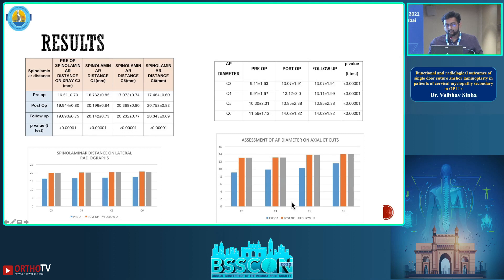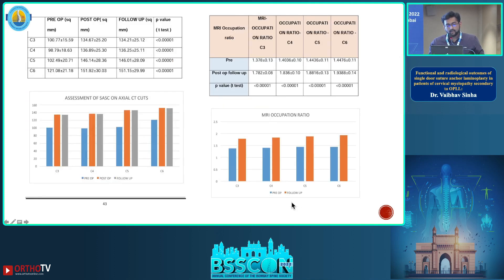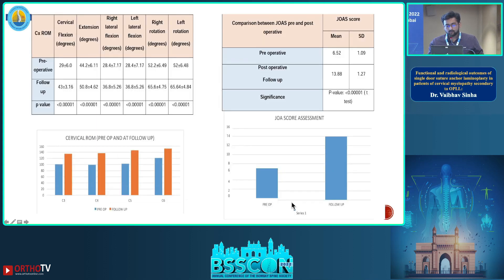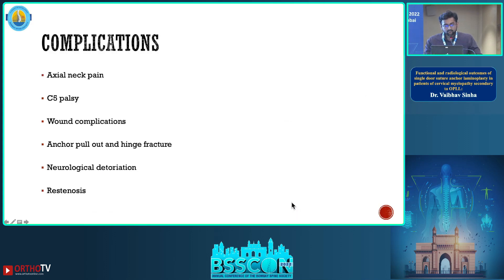The results showed increased spinal laminar distance on lateral radiographs. The AP diameter increase was maintained over a six-month follow-up period. The MRI occupying ratio was also increased at six months follow-up, cervical range of motion was increased in the majority of patients, and the modified Japanese Orthopaedic Association score also improved. Among eight patients, three had persistent neck pain and two had C5 palsy, both managed conservatively. There were no incidents of anchor pullout or hinge fracture, and no cases of neurological deterioration.